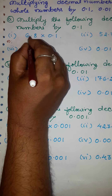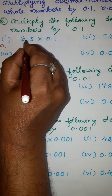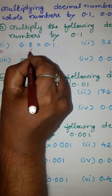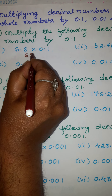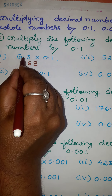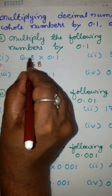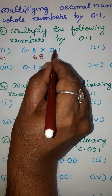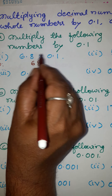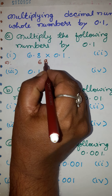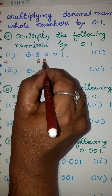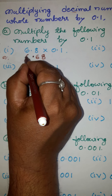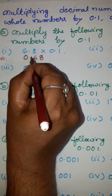The first problem: I am multiplying 6.8 by 0.1. Write this number as 68, ignoring the decimal point. In 6.8, after the decimal point there is one place. In 0.1, after the decimal there is also one place. One place plus one place equals two places. So from here we have to move two places from right to left, then insert a zero and put the decimal point. The answer is 0.68.